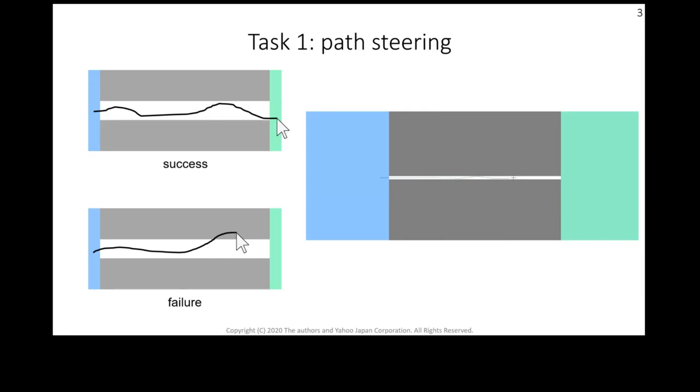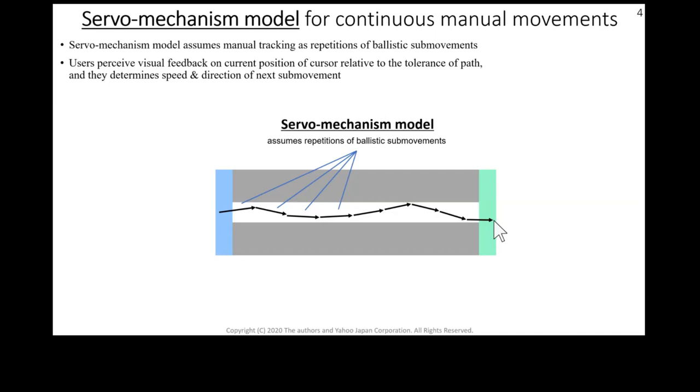Users move the cursor along a narrow path. The key idea to predict the success rate is to interpret a steering motion as repetitions of ballistic sub-movements. This is called the servo-mechanism model.